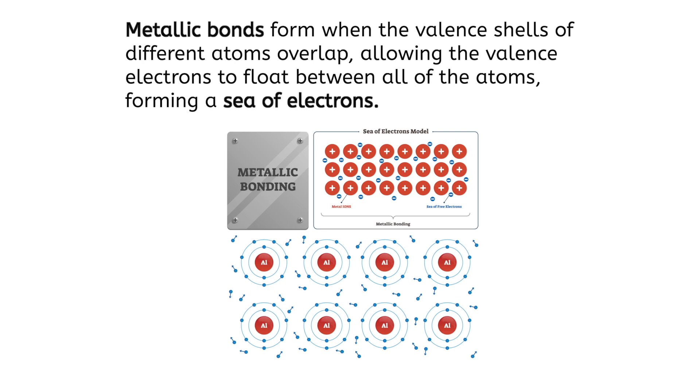This means that while the valence electrons originally came from a particular element, like you had an assigned table at the party in the opening, when they form metallic bonds, they are constantly moving through the substance and are no longer attached to a particular nucleus, like when you were mingling at all of the different tables at the party.